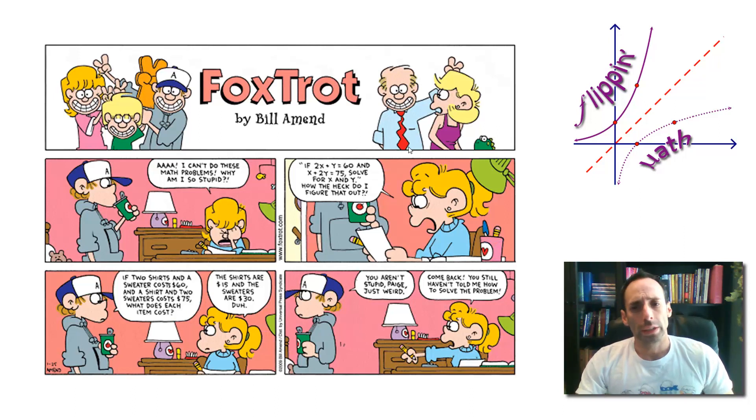And Peter responds, if two shirts and a sweater cost $60 and a shirt and two sweaters cost $75, what does each item cost? And she rattles off, the shirts are $15 and the sweaters are $30. Duh! You aren't stupid, Paige. Just weird. Come back! You still haven't told me how to solve the problem.